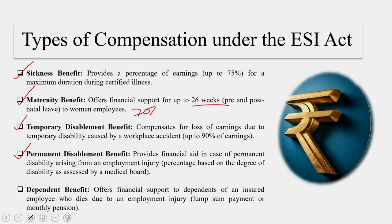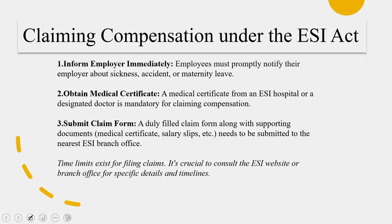The last type is the dependent benefit. It offers financial support to dependents of an insured employee who dies due to an employment injury, in the form of a lump sum payment or monthly pension. The dependent benefit is typically calculated as a percentage of the deceased employee's wages, subject to a maximum monthly amount. These are the types of compensation prescribed under the ESI Act.